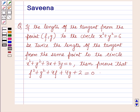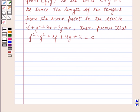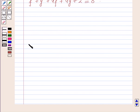Hello and welcome to the session. In this session we will discuss a question which says: if the length of the tangent from the point (f, g) to the circle x² + y² = 6 is twice the length of the tangent from the same point to the circle x² + y² + 3x + 3y = 0, then prove that f² + g² + 4f + 4g + 2 = 0. Now before starting the solution we should know a key result.